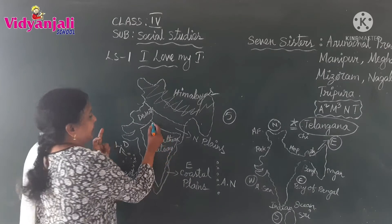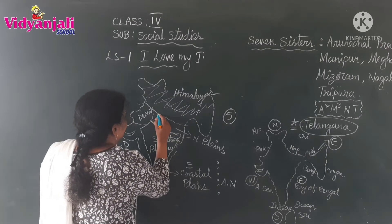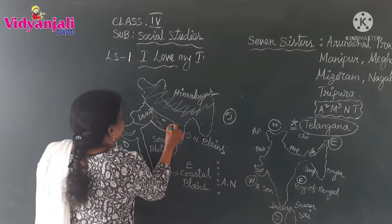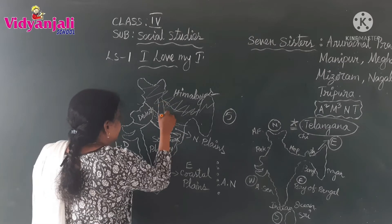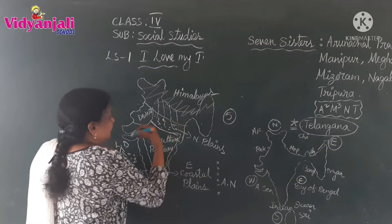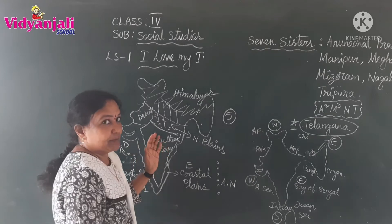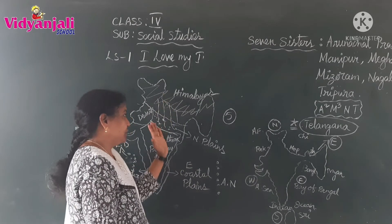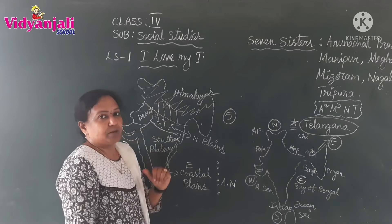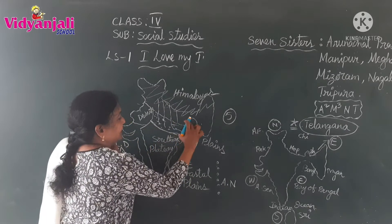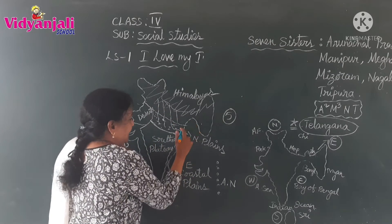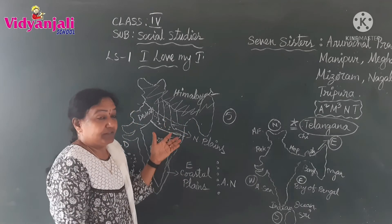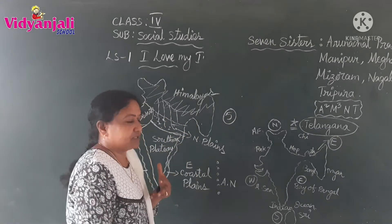Coming to the Northern plains. These are the Northern plains. Three rivers are flowing through this — Ganga, Yamuna, Brahmaputra. These Northern rivers originate in the Himalayas and flow through the Northern plains. That is why the Northern plains are very fertile in our country, and different types of crops are cultivated.